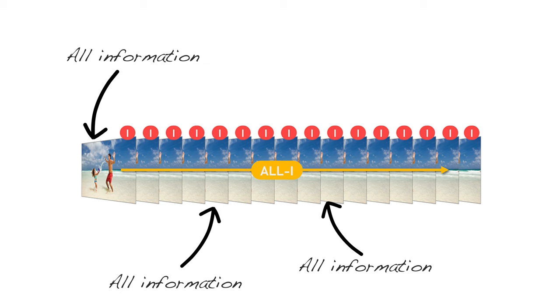With an all-intra codec, every single pixel in every frame is captured. All-intra codecs generally look better during scenes with a lot of movement, since each frame gets a full readout, meaning more information and therefore fewer artefacts compared to long GOP.